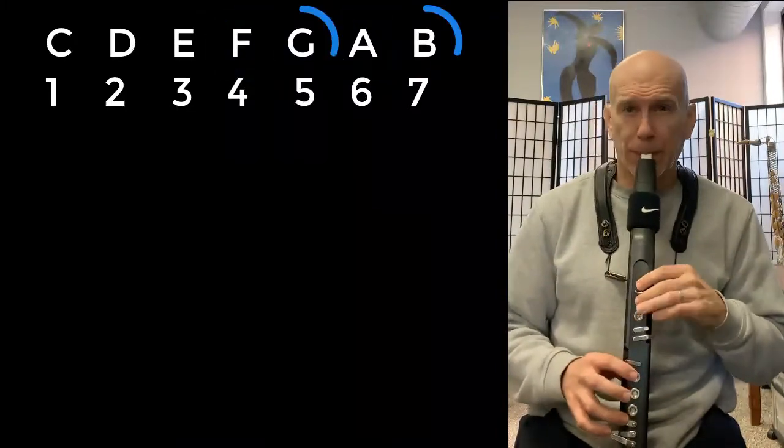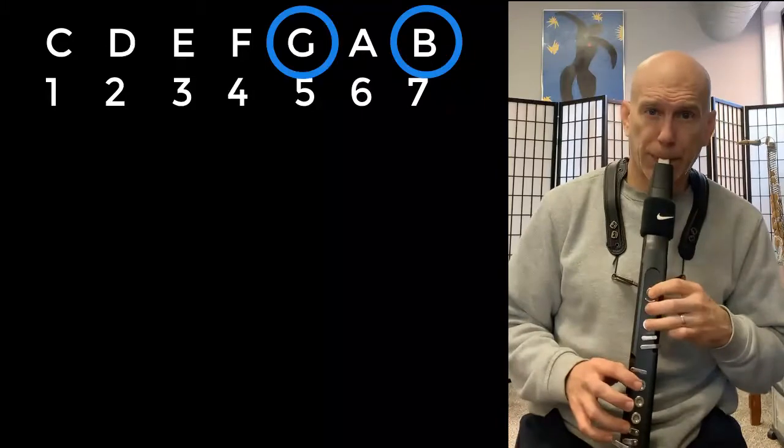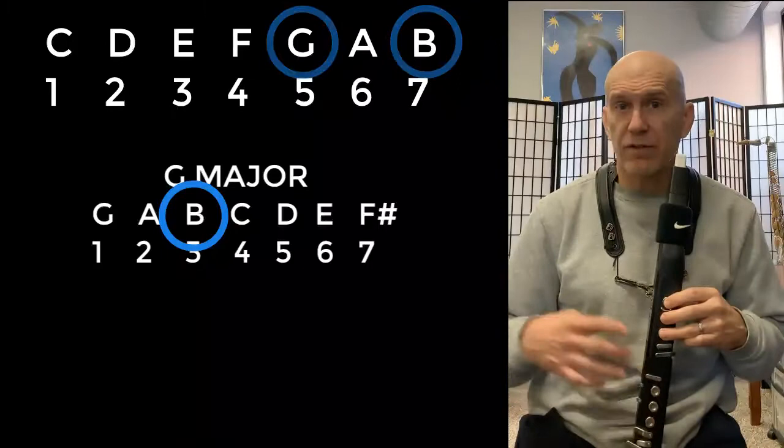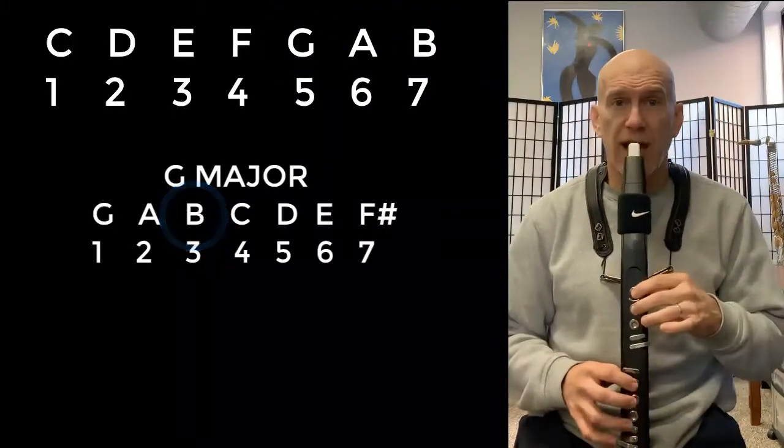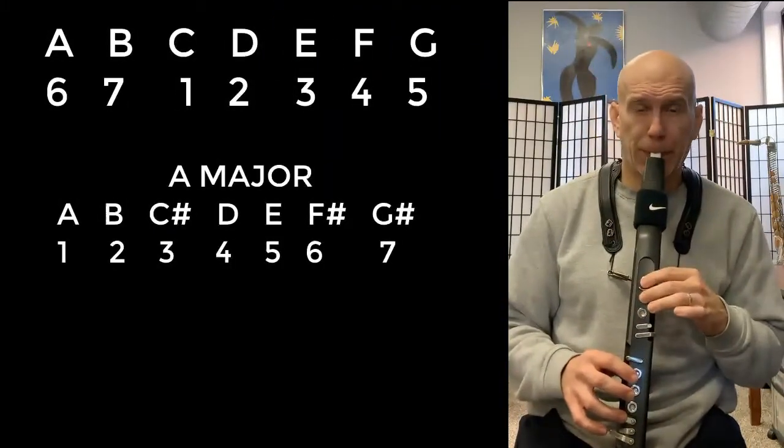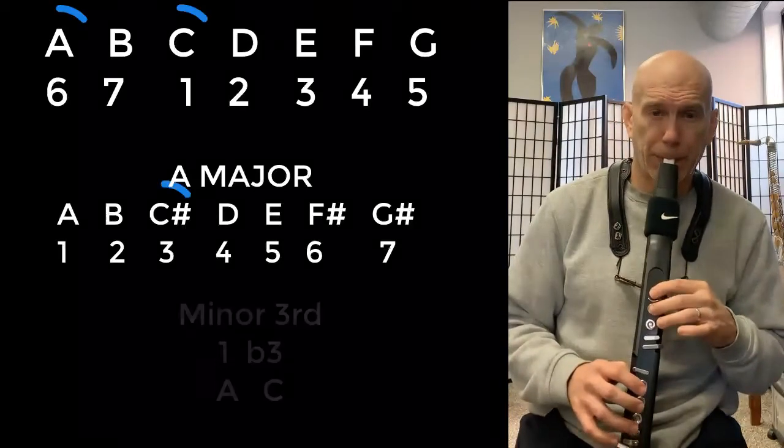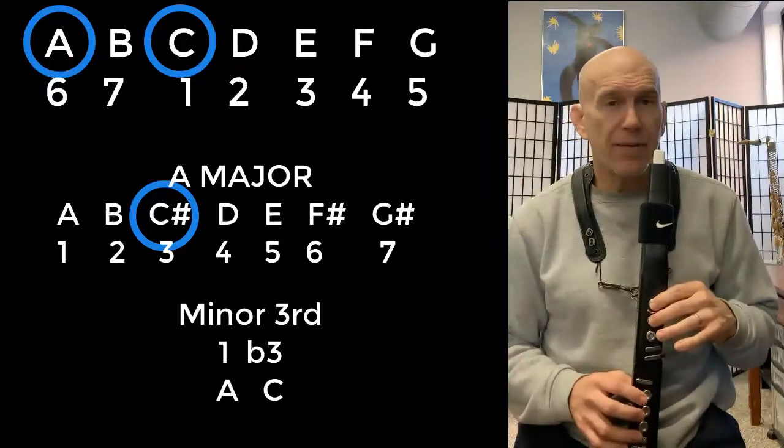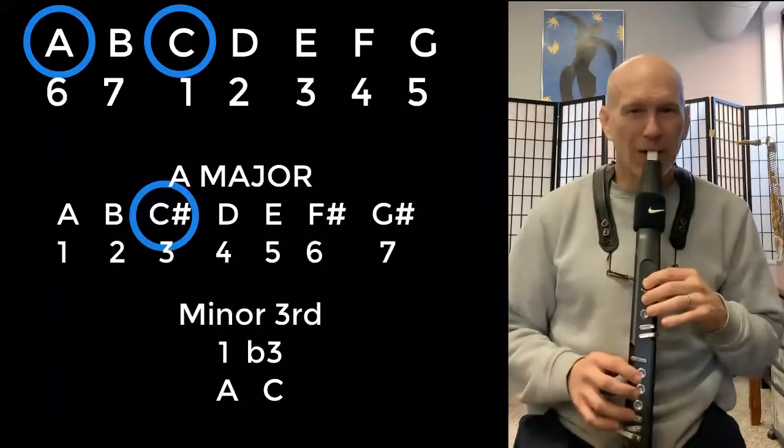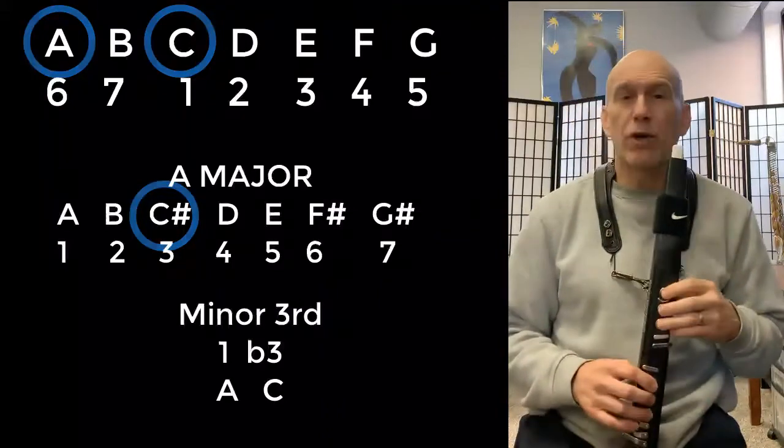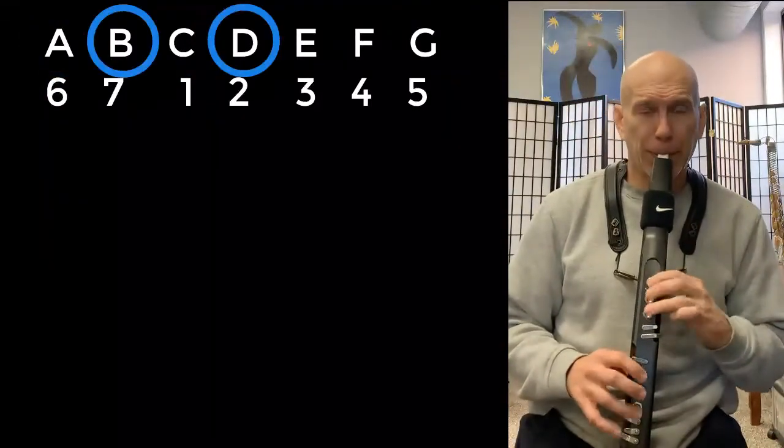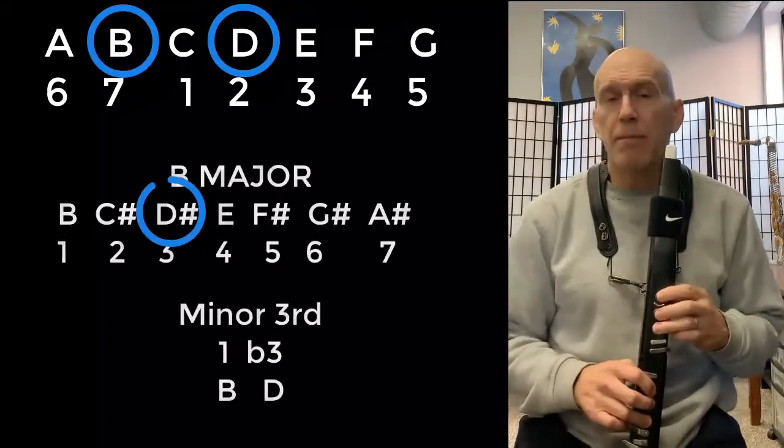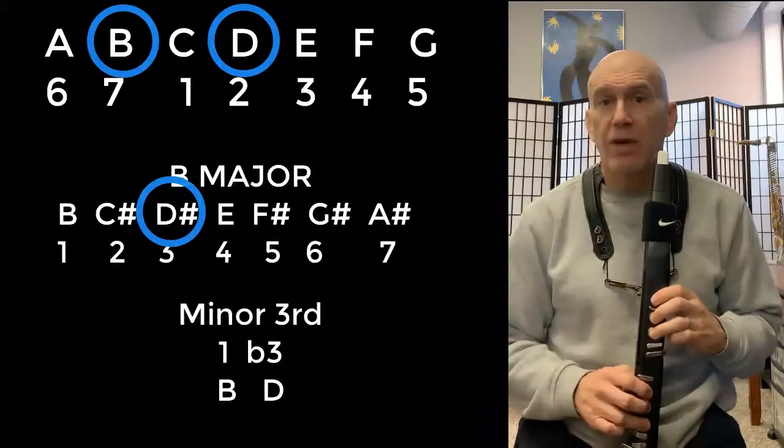G. G to B is a major scale because that's the interval of G major. We're going to A. That's a minor third because in the key of A, C would be sharp. Let's go to B. That's a minor third because in the key of B, D would be sharp.